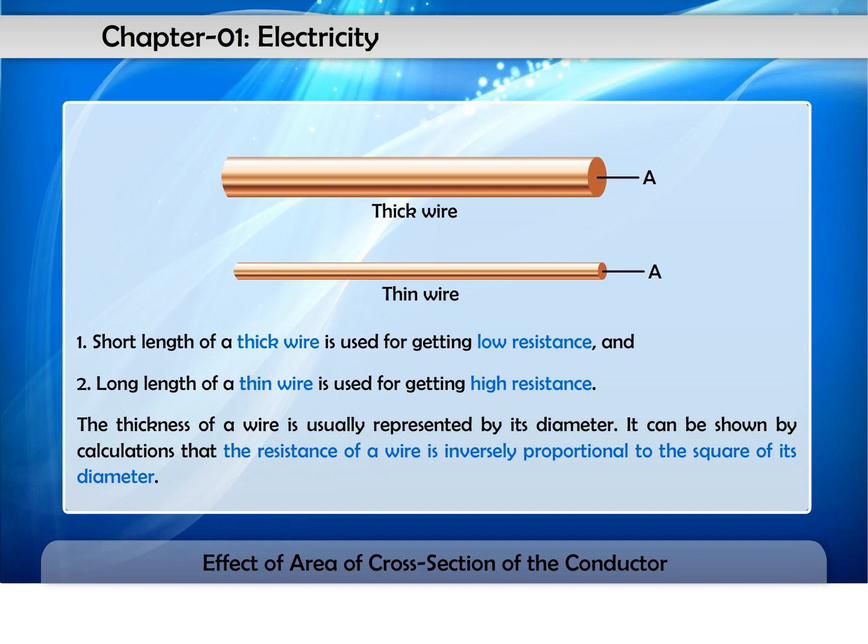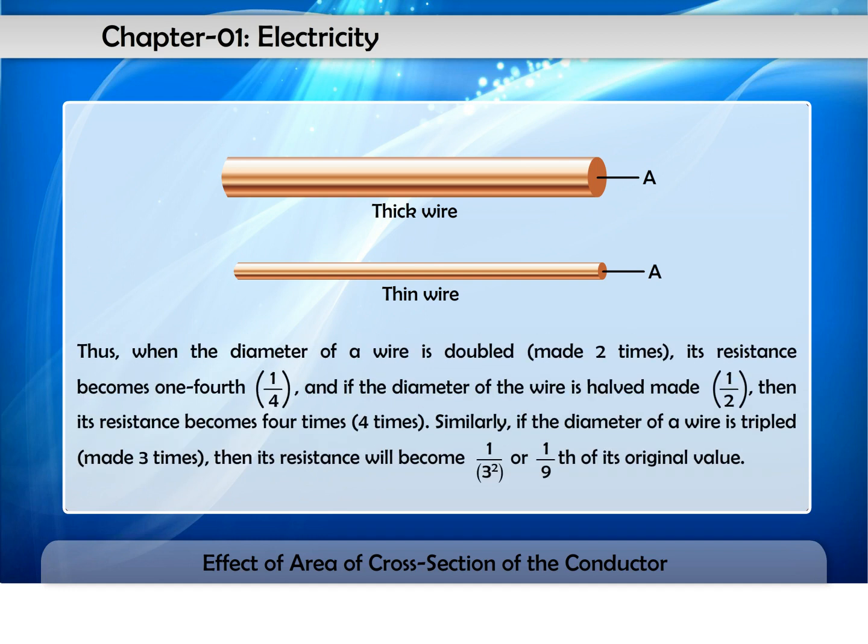The thickness of a wire is usually represented by its diameter. It can be shown by calculations that the resistance of a wire is inversely proportional to the square of its diameter. Thus,